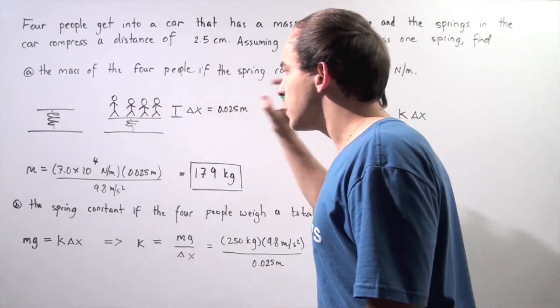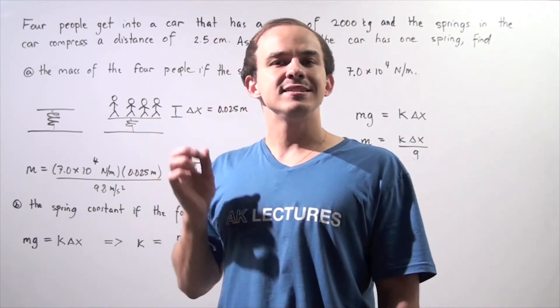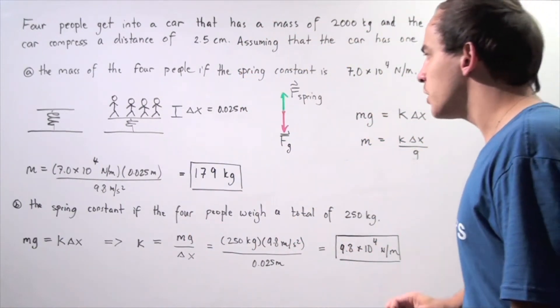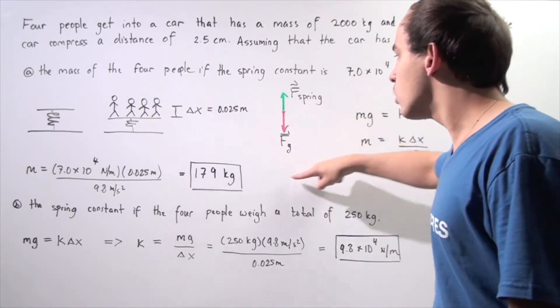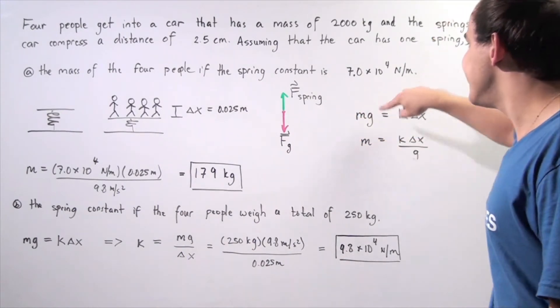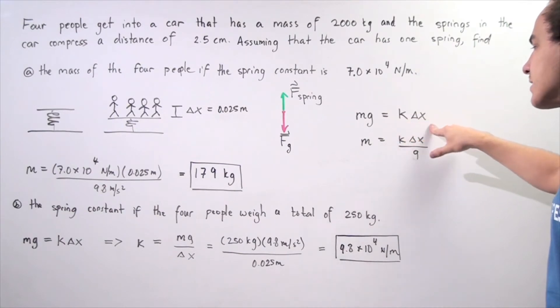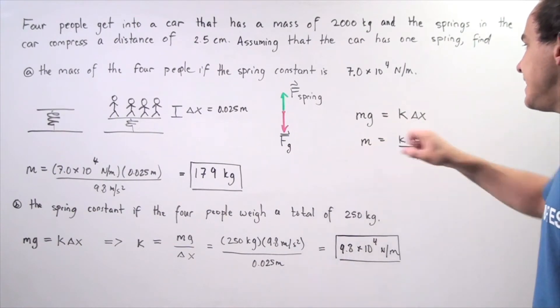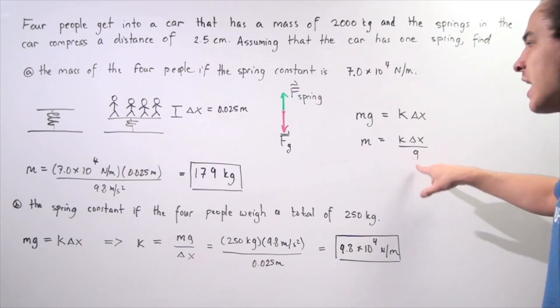When the spring compresses, our car is in static equilibrium. The spring is in static equilibrium, and that means the force created by the spring, which points upward, is equal to the force of gravity, which points downward. So mg, the force of gravity, is equal to the force created by the spring, k times change in x. We want to calculate what m is, so we isolate m, and m is equal to k times change in x divided by g, our gravitational constant.